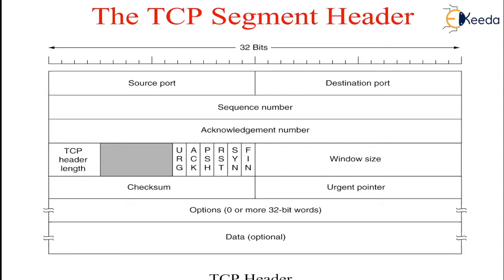The SYN bit is used to establish connections. The connection request has the SYN bit set to 1 and the ACK bit set to 0, to indicate that the piggybacked acknowledgement field is not in use. The connection reply does bear an acknowledgement, so it has SYN set to 1 and ACK also set to 1. In essence, the SYN bit is used to denote connection request and connection accepted, with the ACK bit used to distinguish between those two possibilities.